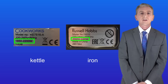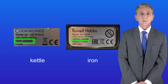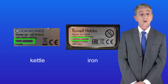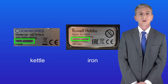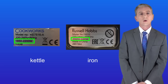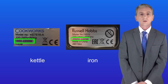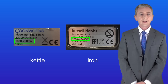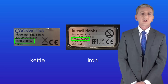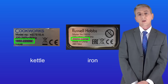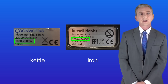Looking at the power ratings of the kettle and the iron, the kettle has a power of up to 2200 watts and the iron has a power of up to 2400 watts. The key point to understand is that appliances designed to generate thermal energy usually have a much higher power rating than appliances designed to generate kinetic energy.